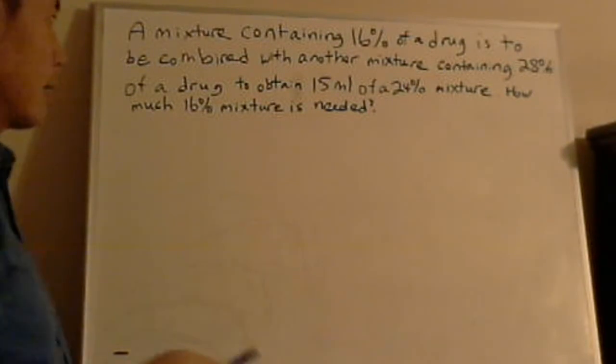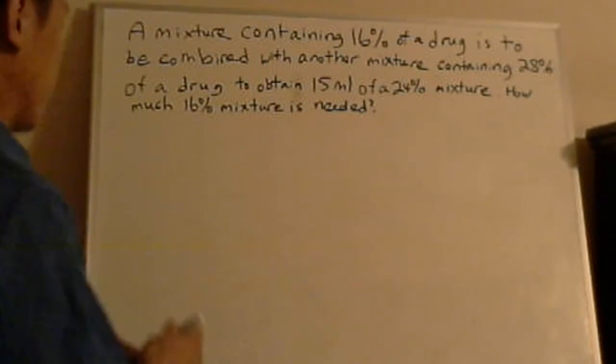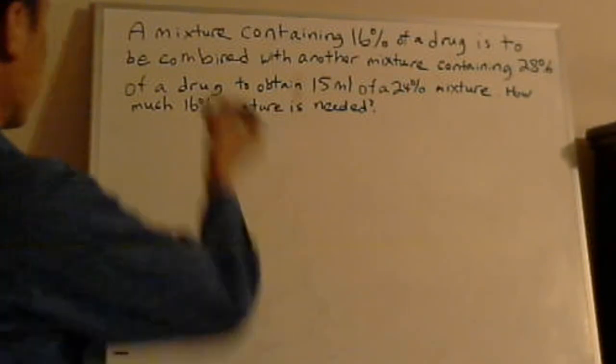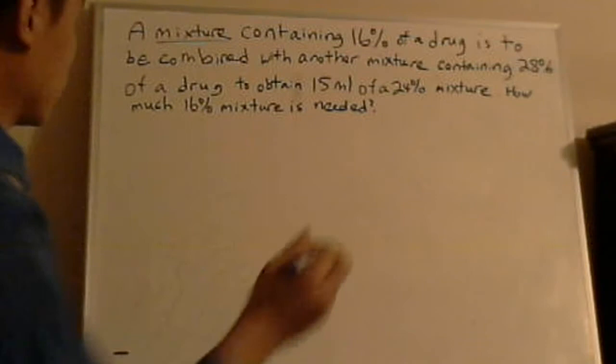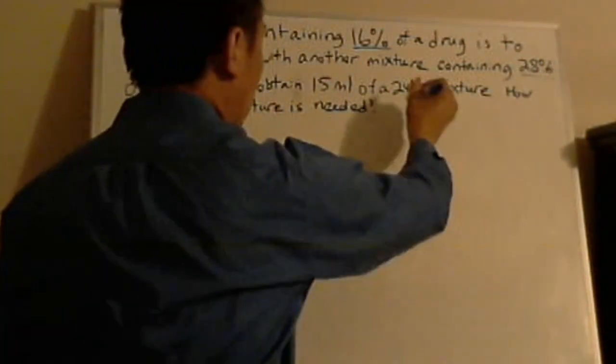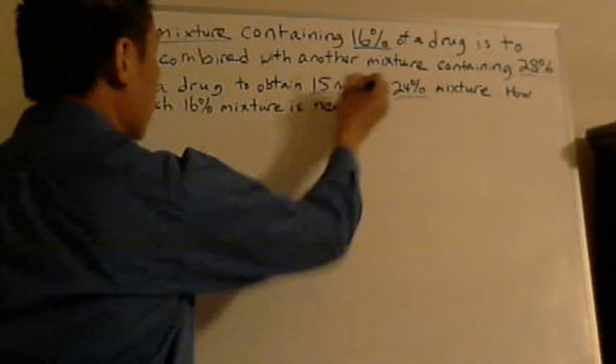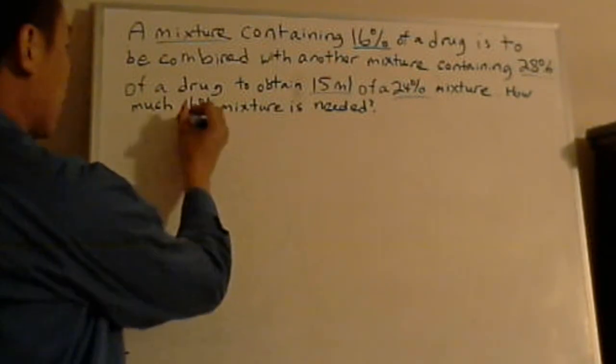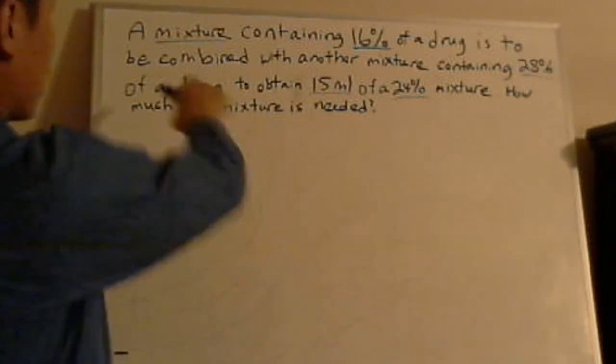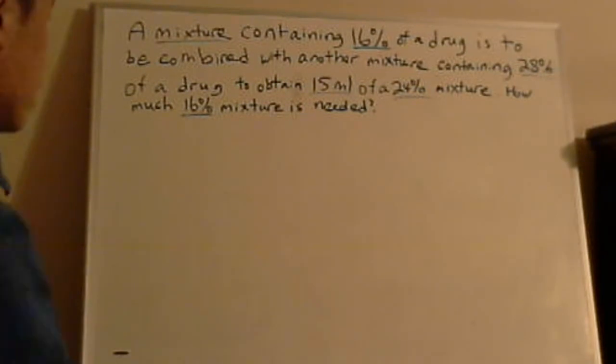So, the keywords, when you're doing word problems, you always want keywords. So first of all, you're doing mixtures, okay? That's one of the keywords, you're doing mixtures. And there's a 16% of a drug, and also a 28% of a drug, which becomes a 24% of a drug. And how much of a 24% of a drug you get? You get 15 milliliters of it. And it asks you how many 16% mixture is needed. So you see, I like to, when I do word problems, I like to underline all my keywords and what are the most important things for me to solve this problem.